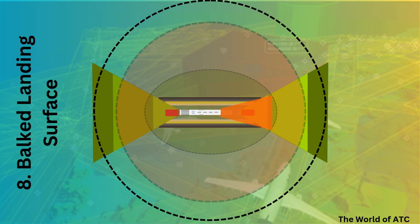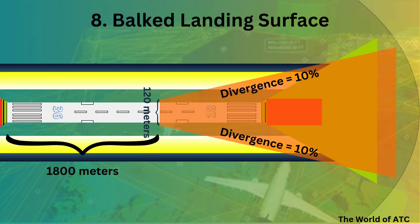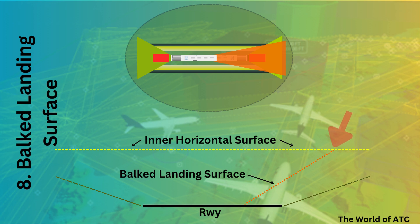In this case, the bulk landing surface is added only for one runway. The inner edge of the bulk landing surface would be 120 meters wide, starting from 1800 meters from the threshold, and has a divergence of 10% on each side. The slope is 3.33% and it ends at the inner horizontal surface. The bulk landing surface has an outer edge parallel to the inner edge and located in the plane of the inner horizontal surface.